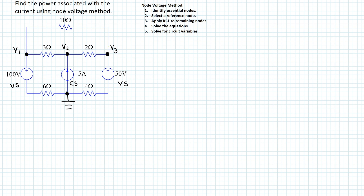Step three is to apply Kirchhoff's current law to the remaining nodes and write the equations. The systematic approach is to assume all branch currents are flowing away from each node. At node 1, node 2, and node 3, we each identify three branch currents. Now we are ready to write the KCL equations at these three nodes.